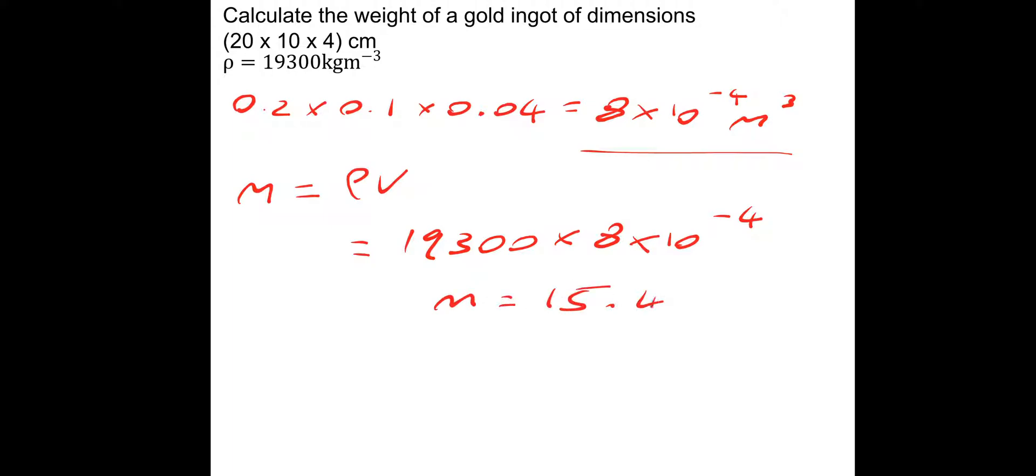First of all, the volume. Let's change the centimetres into metres. So, 20 by 10 by 4 would be 0.2 times 0.1 times 0.04, which gives a volume of 8 times 10 to the minus 4 cubic metres. Then mass is density times volume. The density is 19,300 multiplied by volume, 8 times 10 to the minus 4, which gives a mass that's equal to 15.44 kilograms.